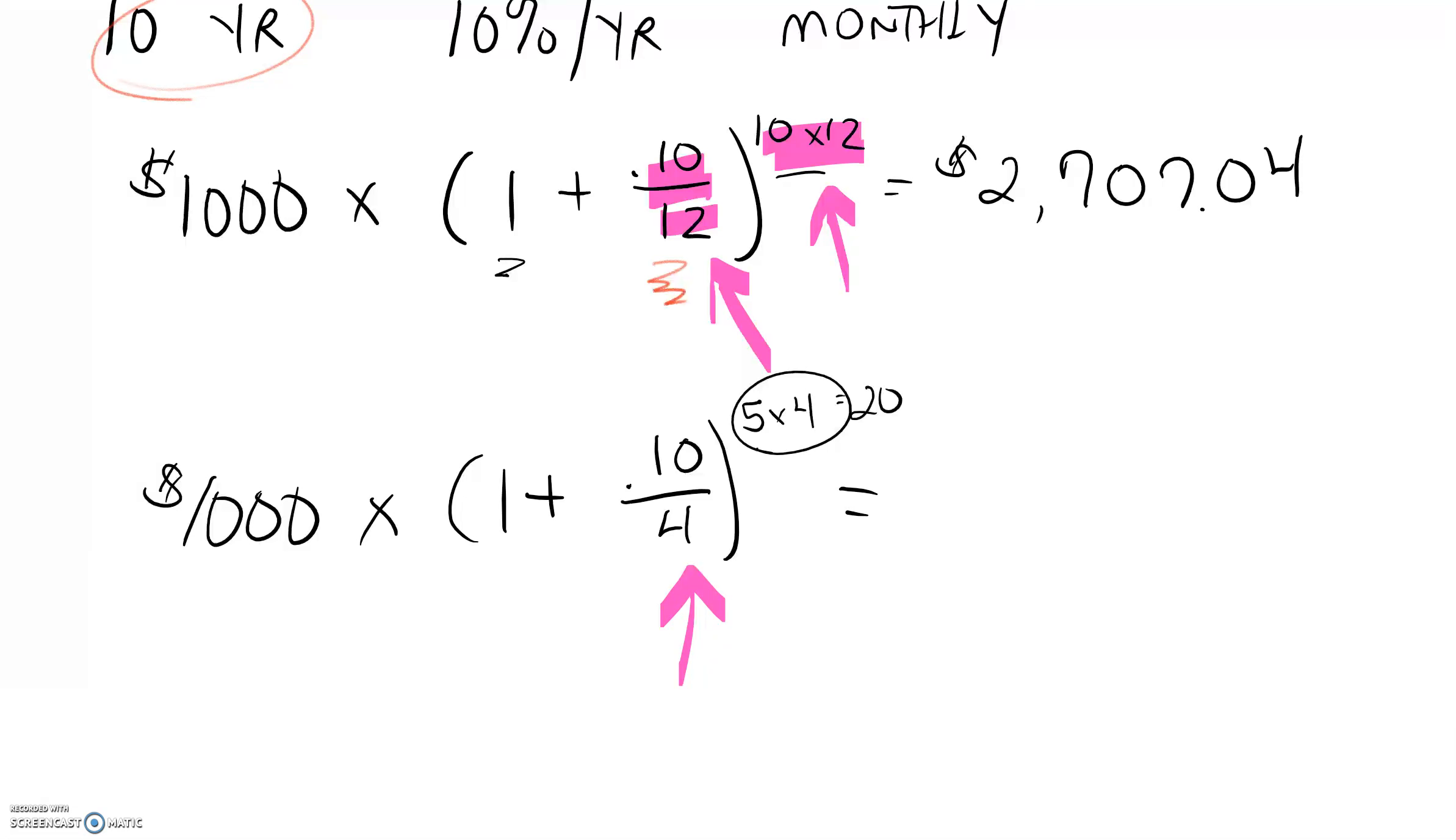And then multiplying it, 0.1 divided by 4, add 1, raise it to the 20th, times 1,000 is a total of $1,638.62. Again, we had to make sure that the compounding period, which is quarters, matches the time period that we have also measured in quarters. That's a critical part. If you ever forget to make sure that these match, you're always going to get an answer, but it's not going to be a correct answer.